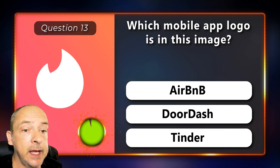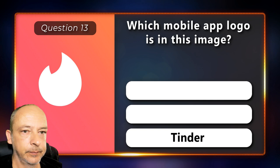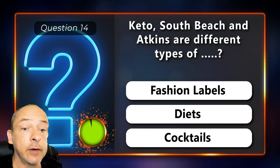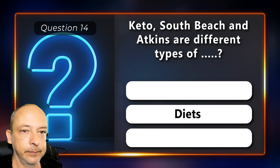Which mobile app logo is in this image — is it Airbnb, DoorDash or Tinder? The correct answer is Tinder. Keto, South Beach and Atkins are different types of what — fashion labels, diets or cocktails? Diets.